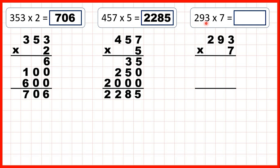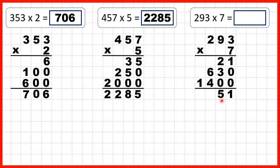Now we have two hundred and ninety-three times seven. Three times seven is twenty-one. We write a zero in our second answer line, and nine times seven is sixty-three. We write two zeros in our third answer line, and two times seven is fourteen. So now: one plus zero plus zero is one, two plus three plus zero is five, six plus four is ten so that's one zero, and one plus one is two. So we get two thousand and fifty-five.